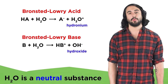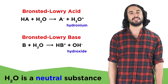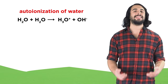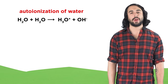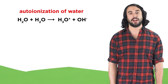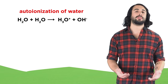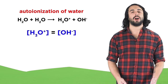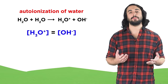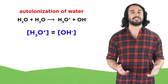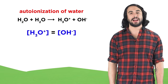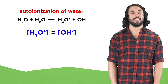We also know that pure water is a neutral substance. This doesn't mean there is no hydronium or hydroxide in solution. But in the autoionization of water, in the rare instance that two water molecules collide and transfer a proton from one to the other, this will always result in the production of precisely one hydronium and one hydroxide. So there must be precisely equal concentrations of hydronium and hydroxide.